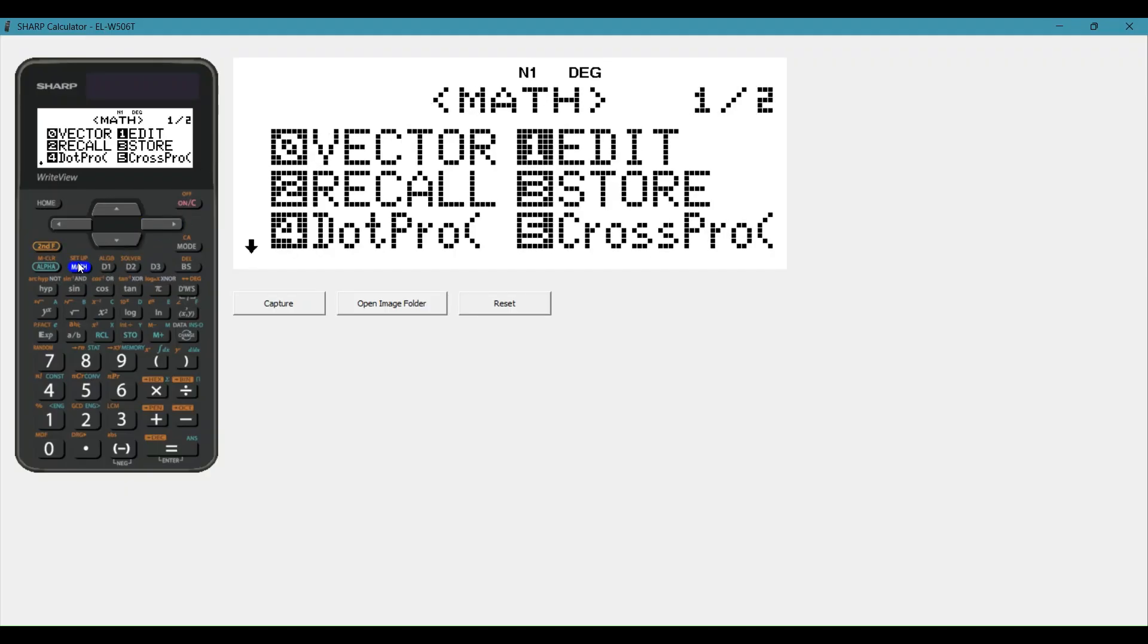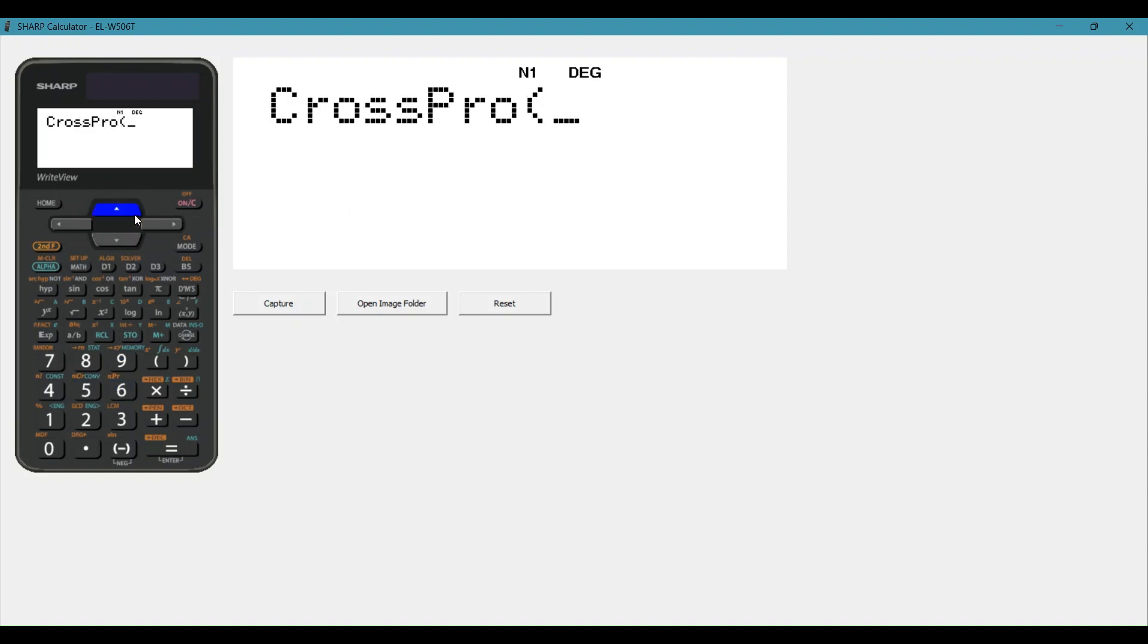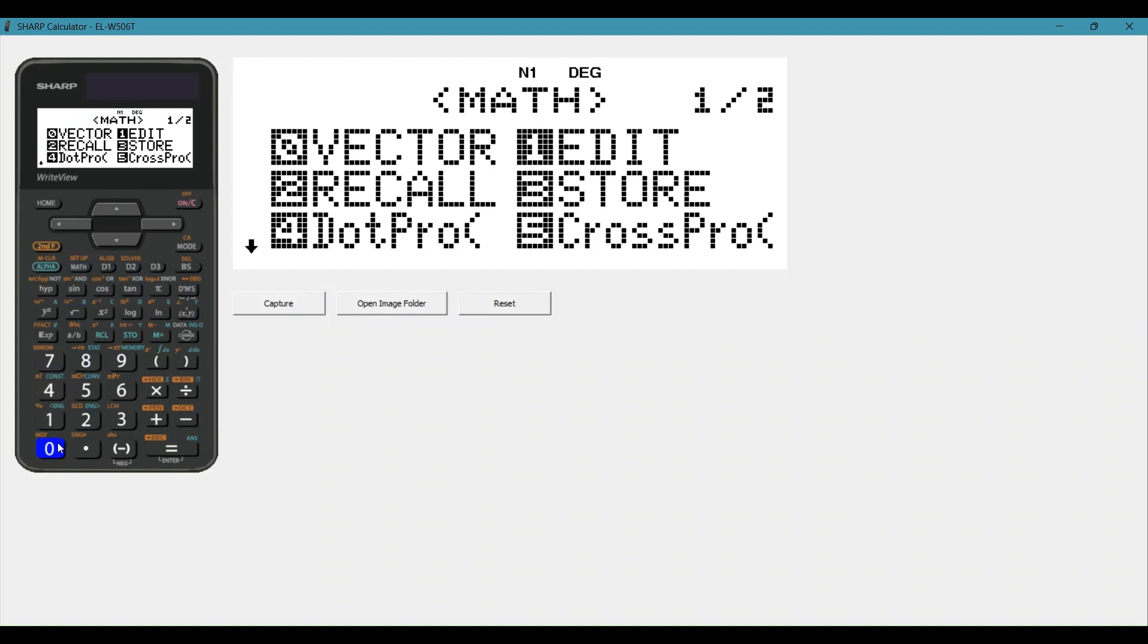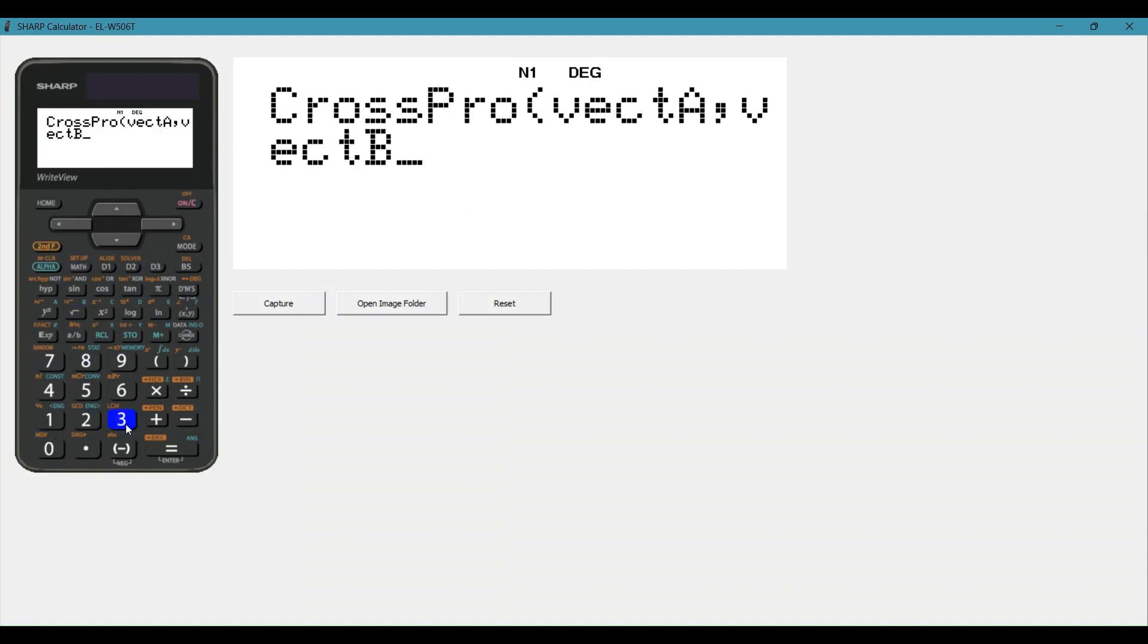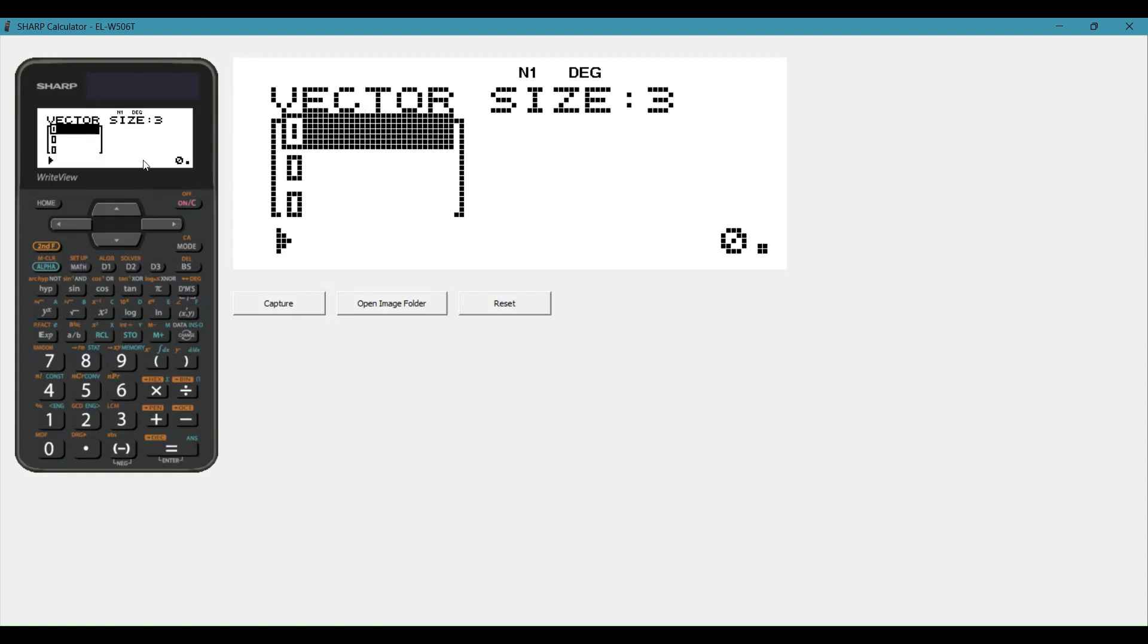To find the cross product, just math, and number 5 is the cross product. Then we'll do our two vectors, and we use exactly the same button as we did with dot product with the x and y. We'll say math, call our vector, vector B, and equals, and you'll see it will give us zero, as we mentioned before.